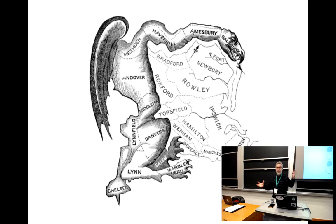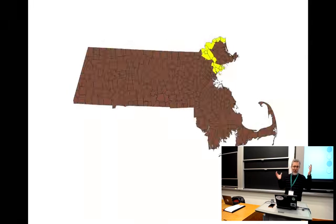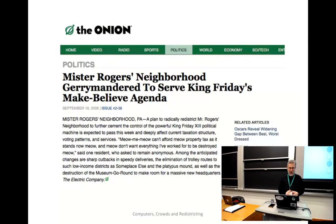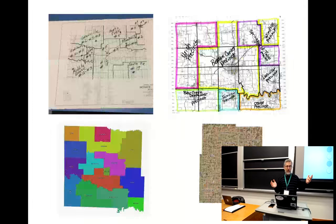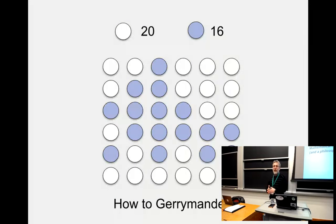For example, suppose you have an ideal state — it's square. We see there are 20 members of the pale party and 16 members of the blue party, but we have different ways we could divide this. We could arrange it so that the blue party gets one seat, or maybe none. That's a simple example. The general example is very, very complicated — incalculably complicated, actually.